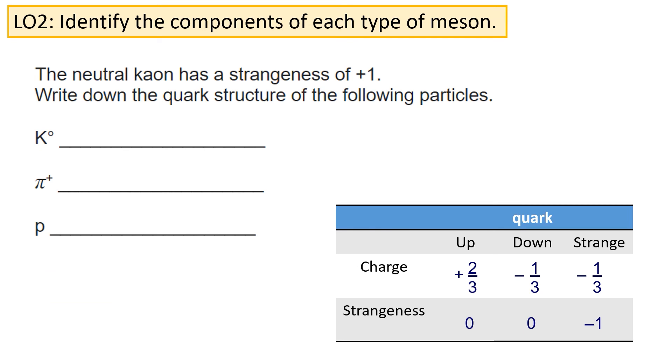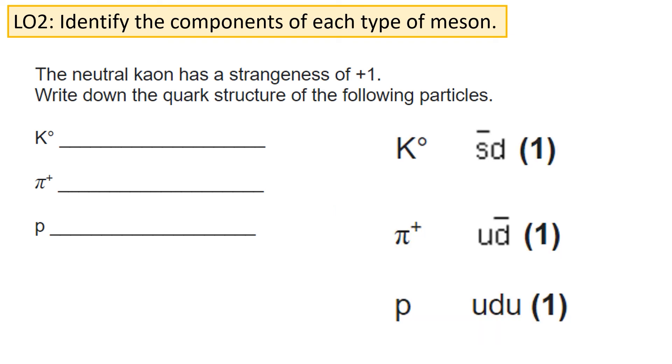Here's a question for you to have a go at. Pause the video and think about what the quark constituents are for the following three particles. Some of the properties of quarks are given to you in the bottom right-hand corner. Just bear in mind that every meson should have a quark and an anti-quark, and every baryon should contain three quarks.